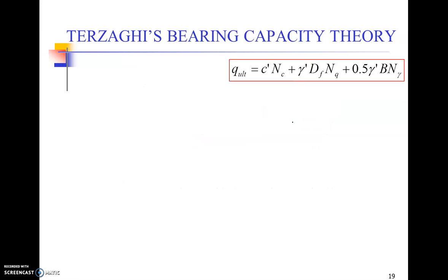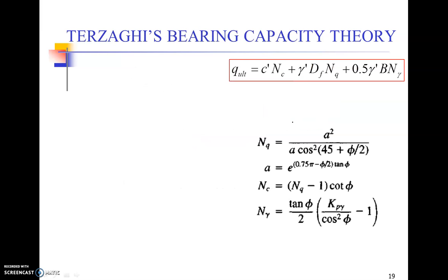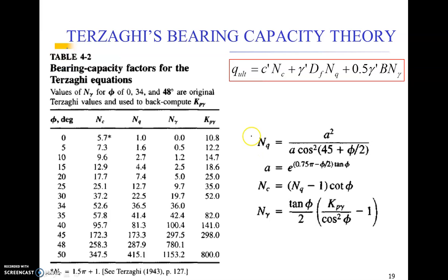So looking at this equation, there are some expressions for Nq and Nc and N gamma which Terzaghi provided based upon rigorous mathematical derivations and other factors. We also provided with a table that has got these Nq, Nc, and N gamma factors.